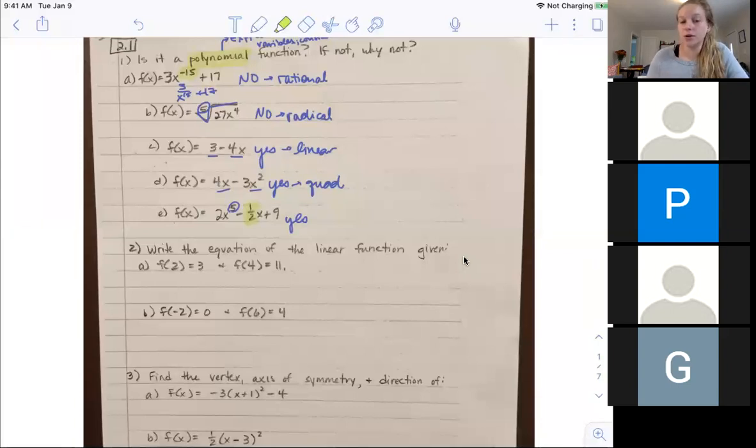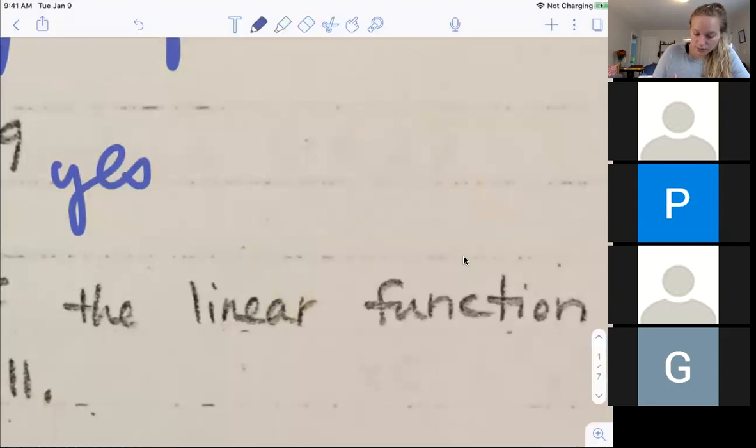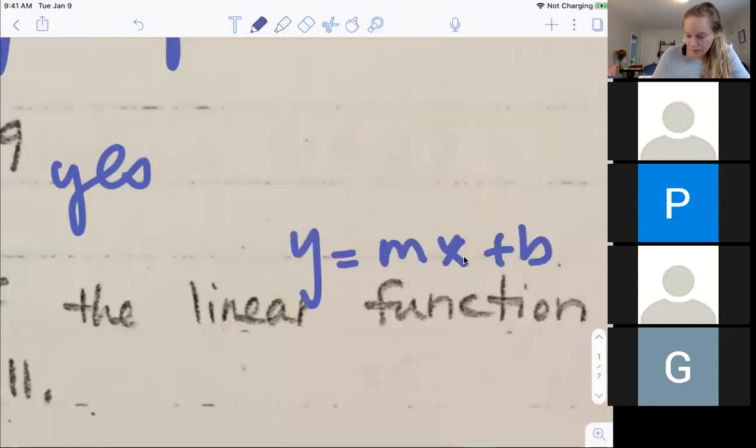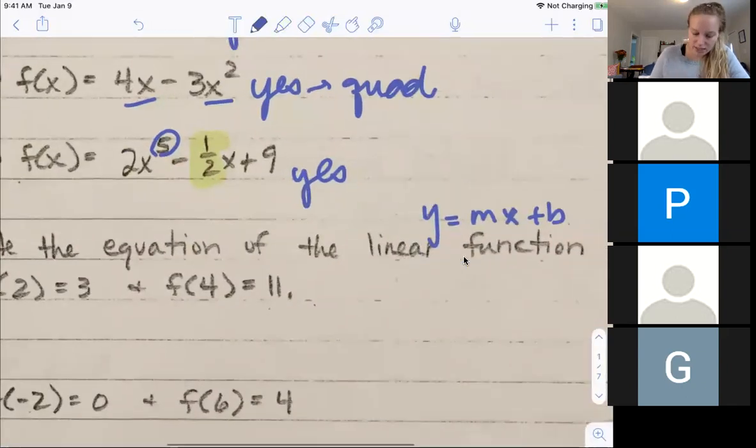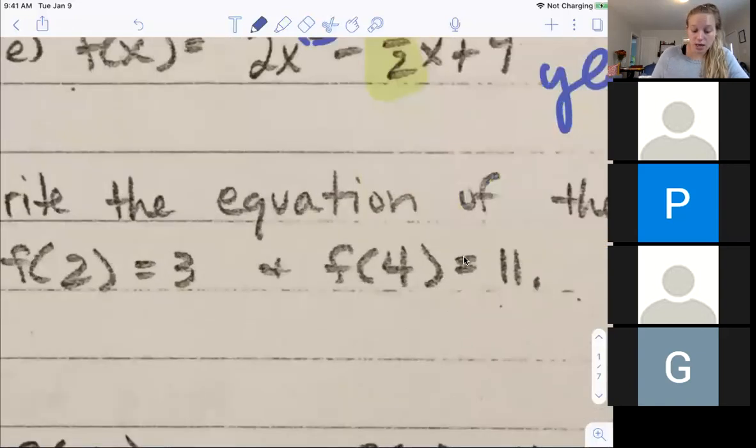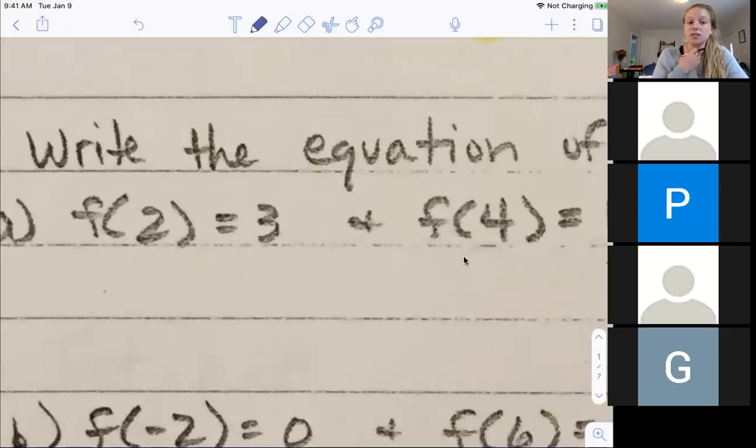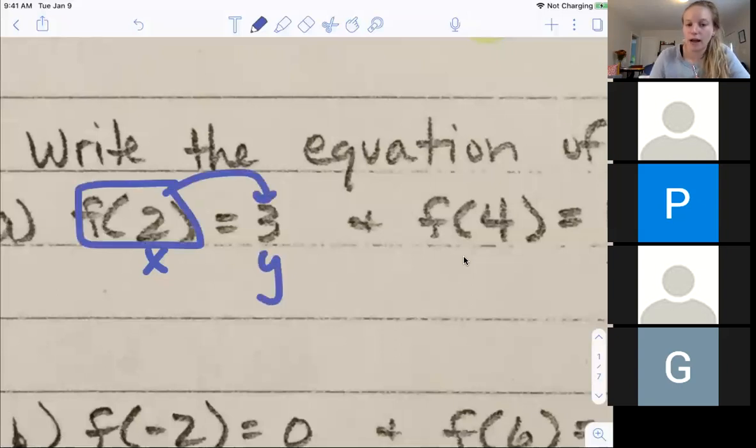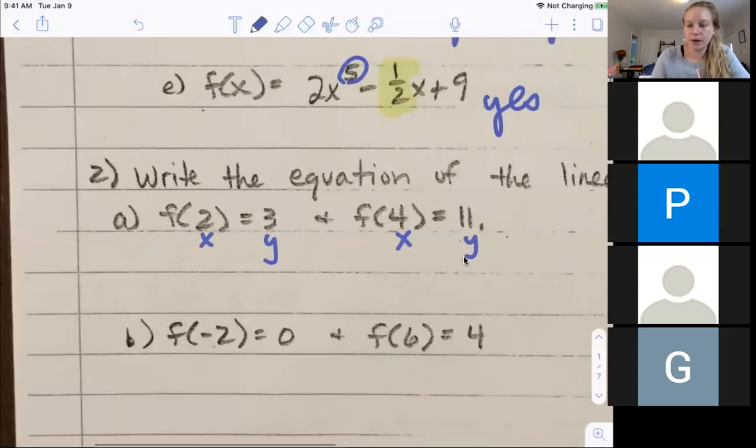Number two is now dealing with some linear stuff, which I know you did in algebra one. It says write the equation of a linear function. I want us to get it into y equals mx plus b. The tricky piece is I wrote them in function notation. So if it's f and then a number in the parentheses, that number is your x because we're plugging two into my function. And when I plug two into my function, I get out three. So that's my y value.